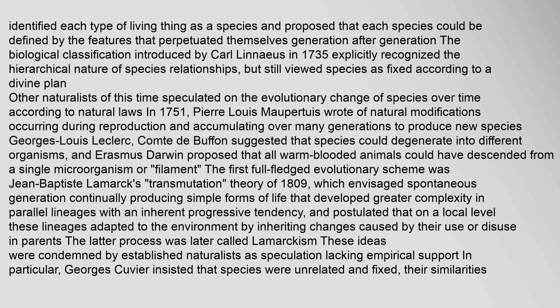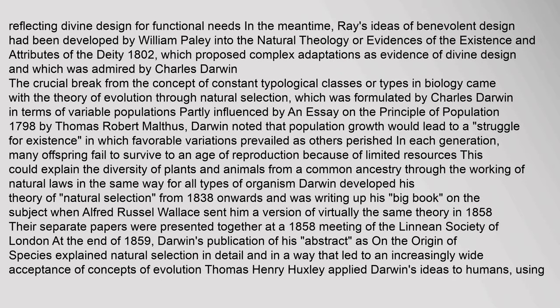Lamarck's theory envisaged spontaneous generation continually producing simple forms of life that developed greater complexity in parallel lineages with an inherent progressive tendency, and postulated that lineages adapted to the environment by inheriting changes caused by their use or disuse in parents — later called Lamarckism. These ideas were condemned by established naturalists as speculation, particularly Georges Cuvier, who insisted that species were unrelated and fixed. Meanwhile, William Paley developed natural theology, proposing complex adaptations as evidence of divine design, which was admired by Charles Darwin.